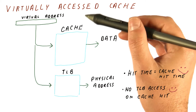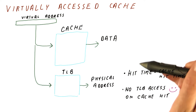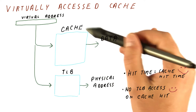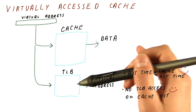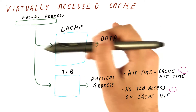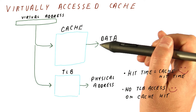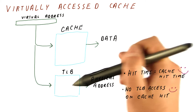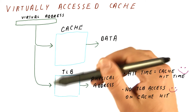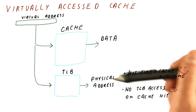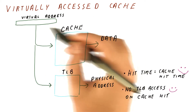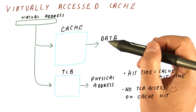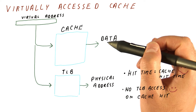The virtually accessed cache has a hit time that is just the cache hit time, because we use the virtual address to access the cache and get the data without address translation on a cache hit. We only access the TLB on a miss, which saves TLB accesses and saves energy. So it looks like the virtually accessed cache would win every time — so why are we even considering physically accessed caches?